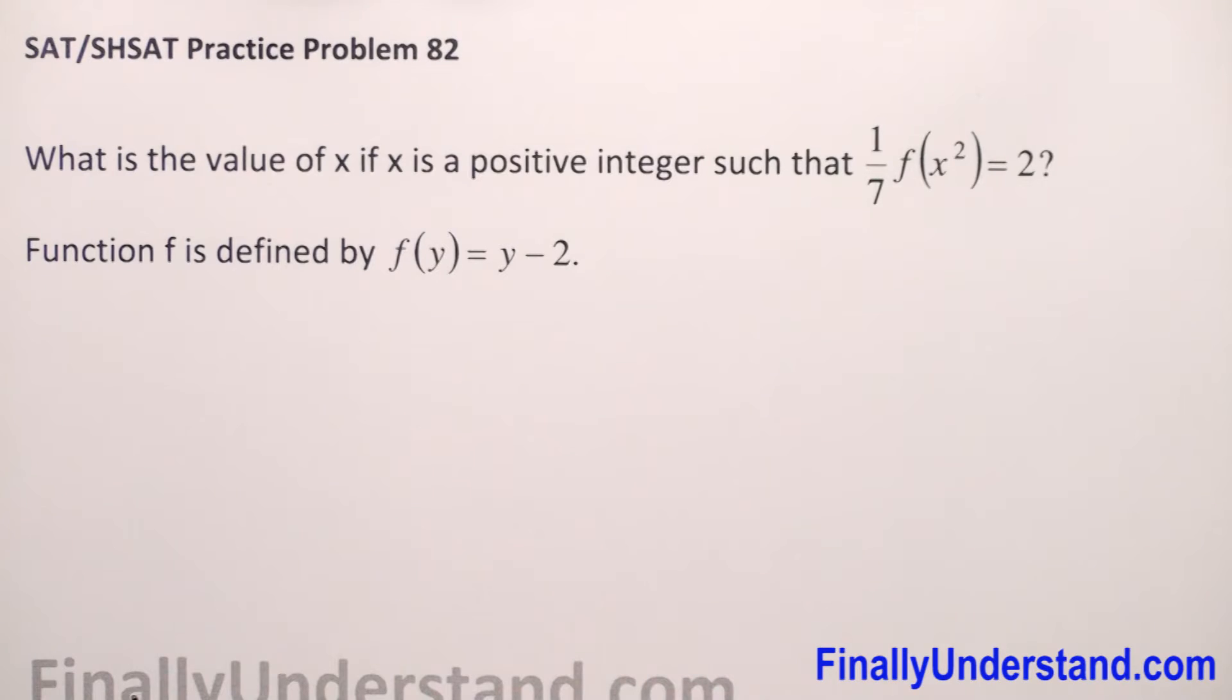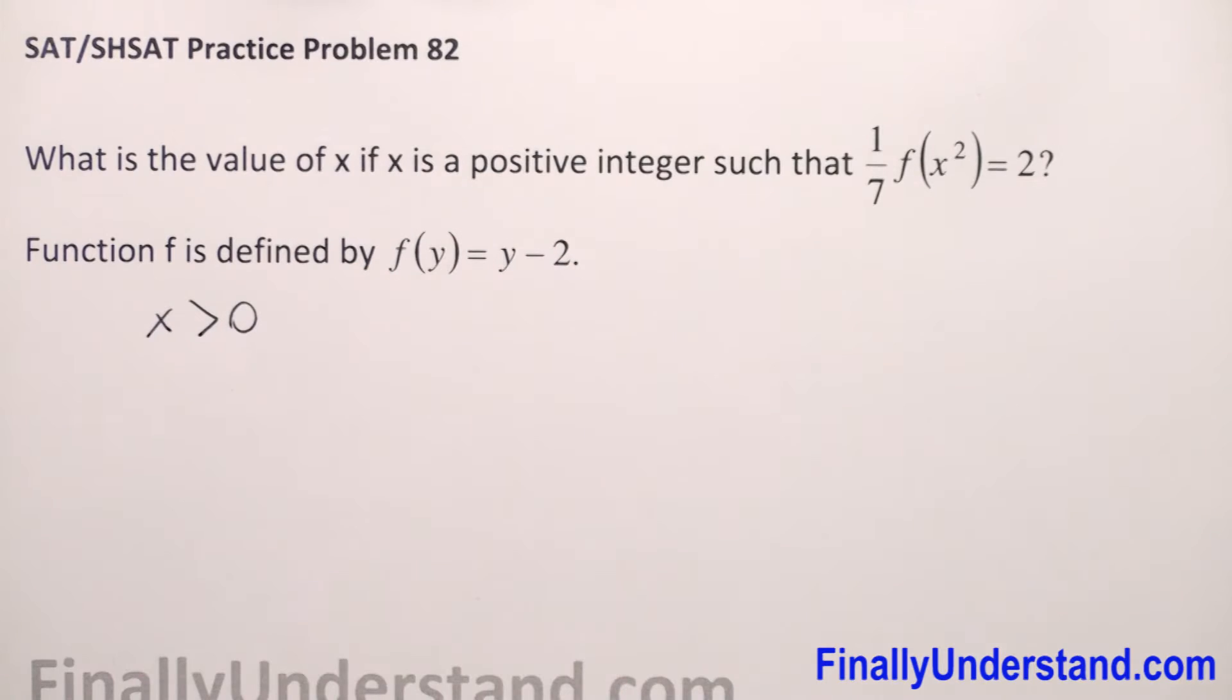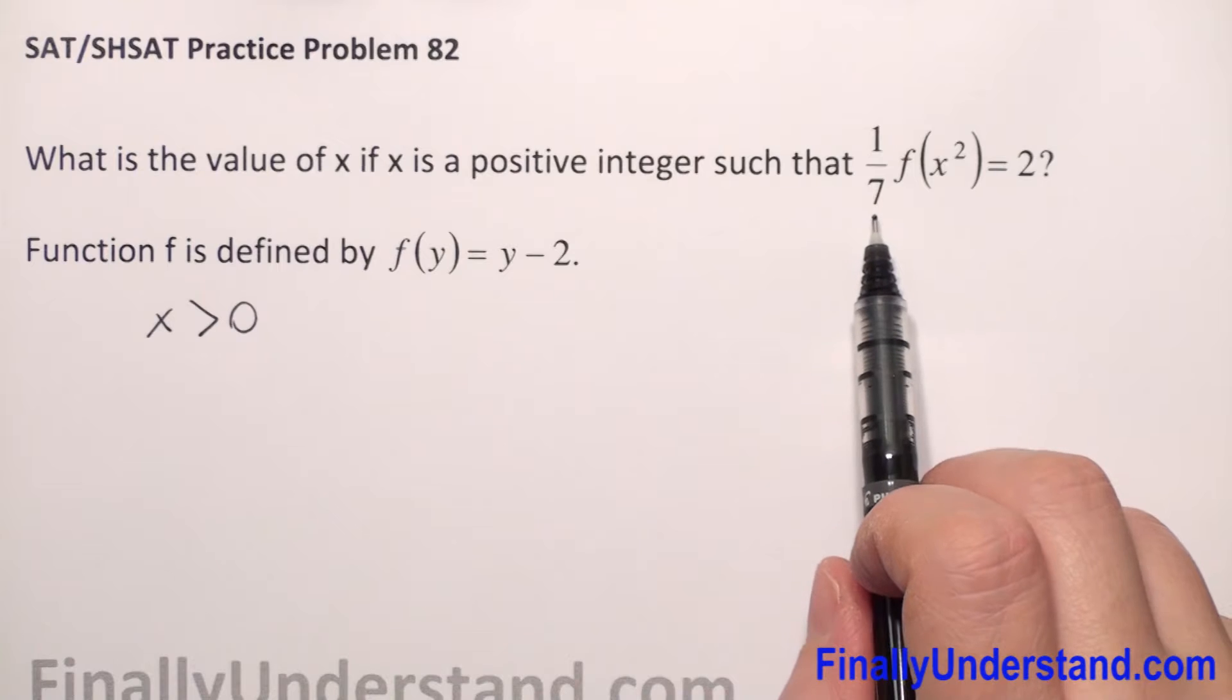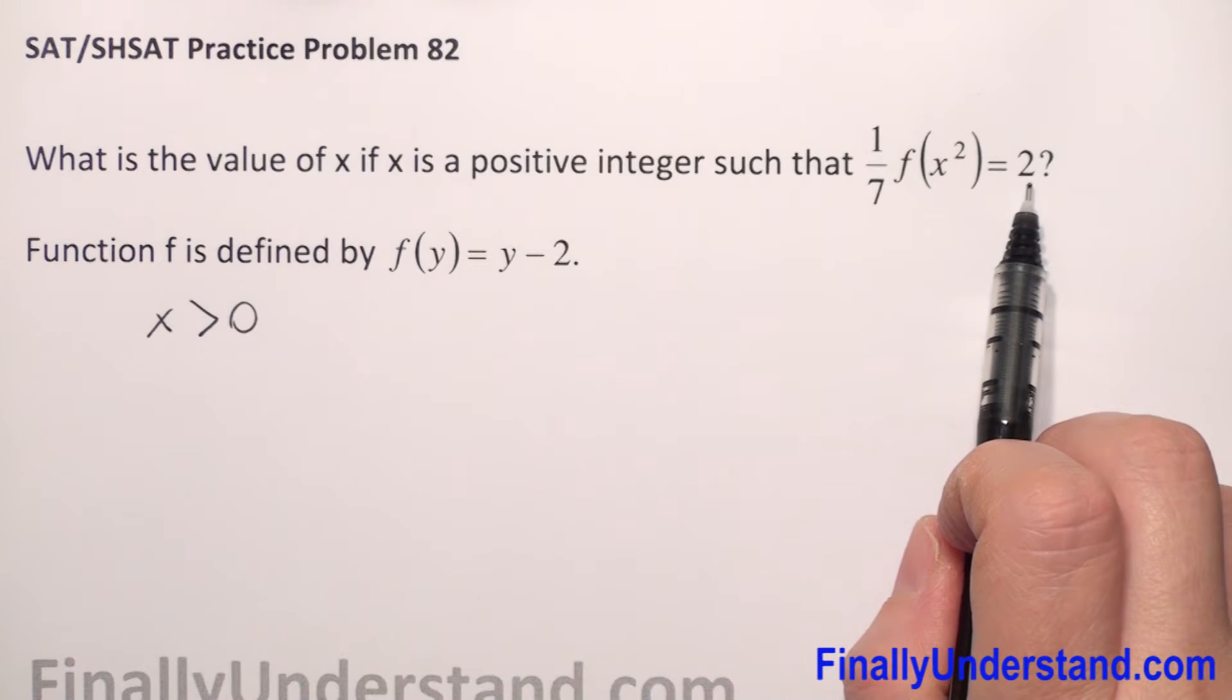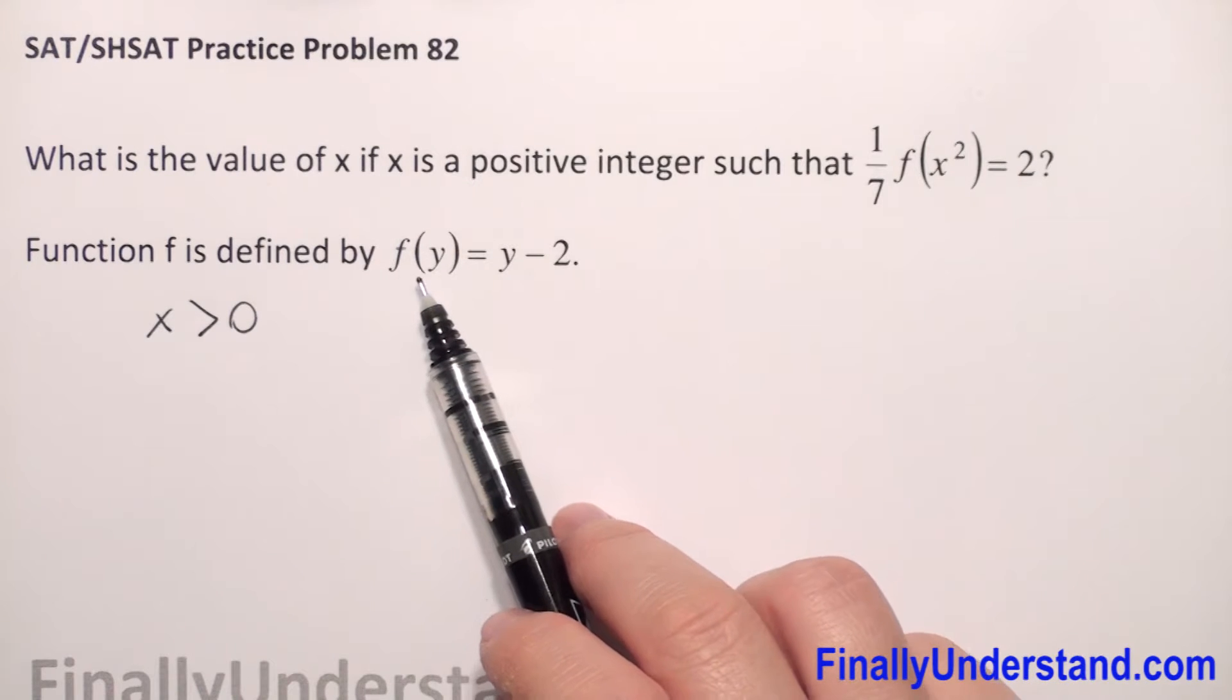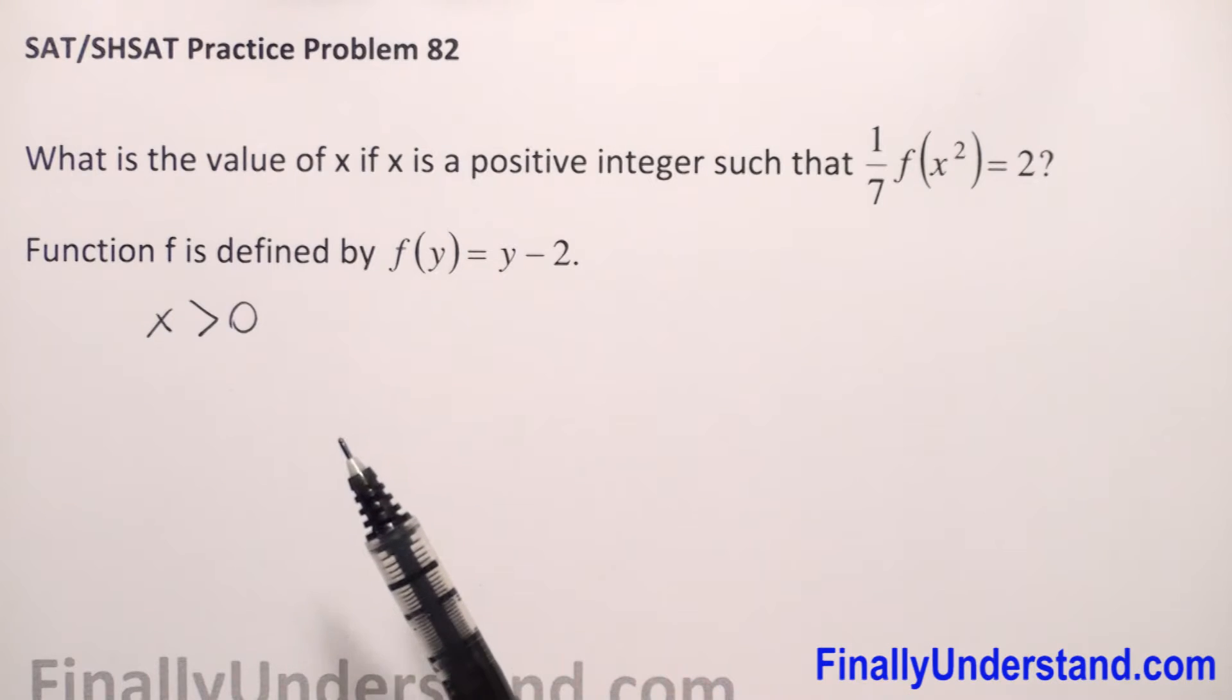So what we have here, given that x is a positive integer so it's greater than 0, and we have that 1 over 7 of f of x squared is equal to 2. We have given function f defined by this formula and we have to find the value of x.